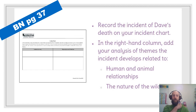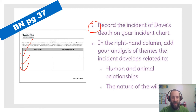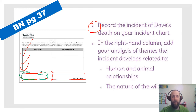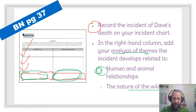Alright, let's jump over to Blue Notebook page 37 to summarize these incidents. Record the incident of Dave's death on your incident chart — find a blank spot, even if you need to make your own little box. Write about Dave's death: summarize what happened, what are the events that led to his death. And then finally, write your analysis of the themes the incident develops related to human-animal relationships and the nature of the wild. What does his death tell us about the way humans interact with dogs out there? And what does this tell us about the wild? Pause the video here.